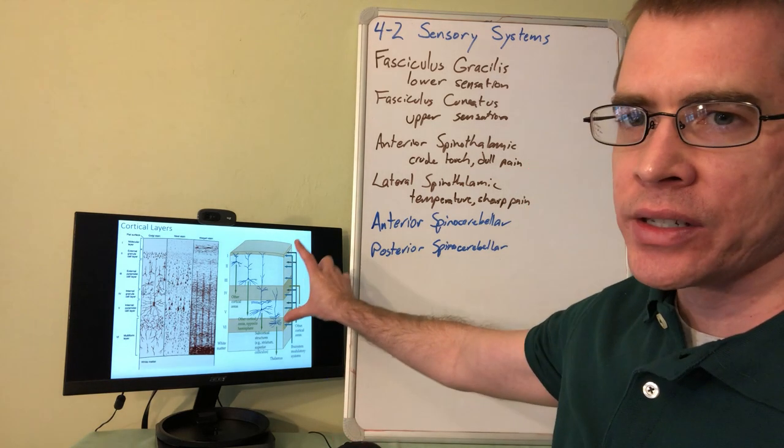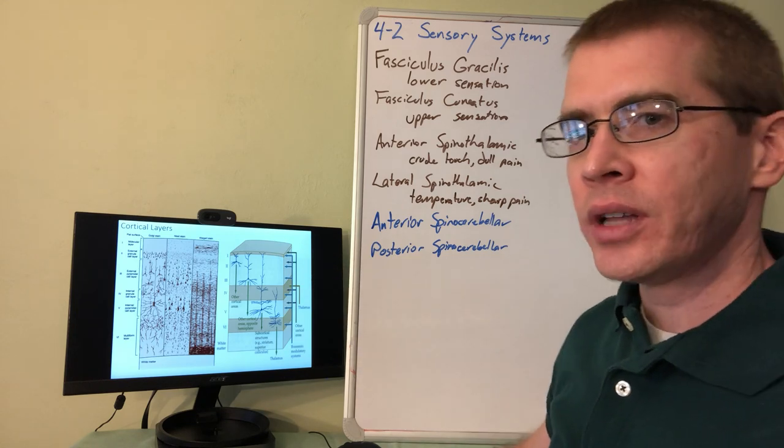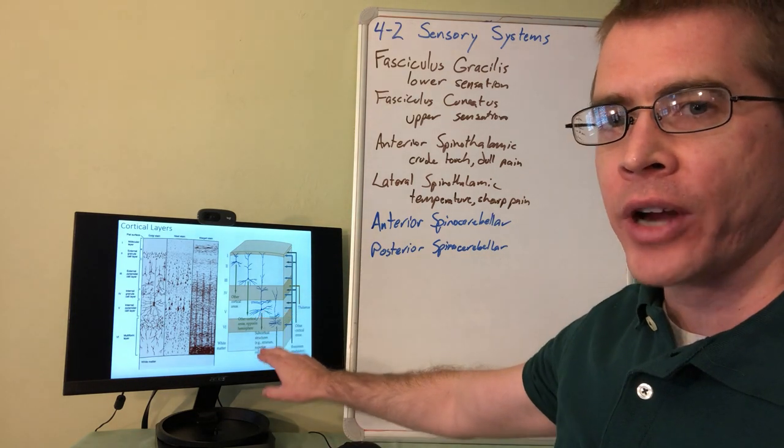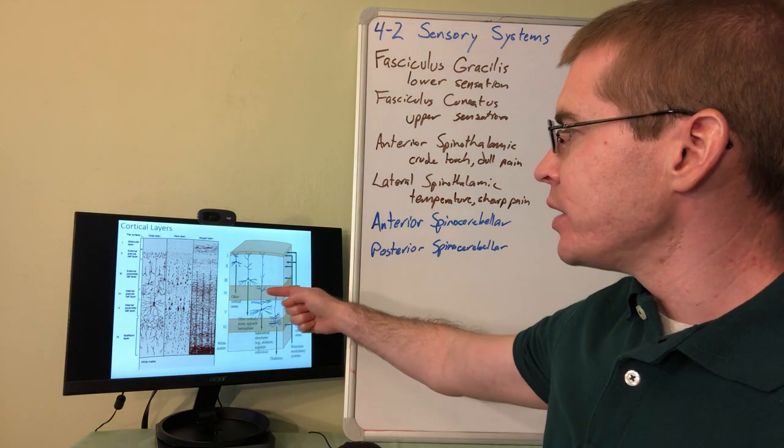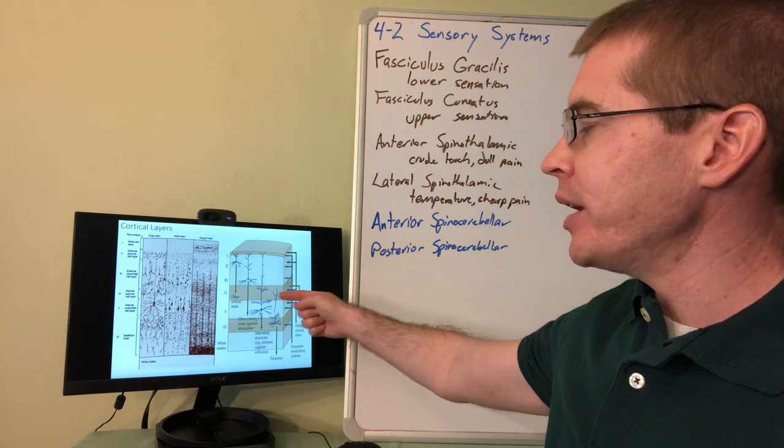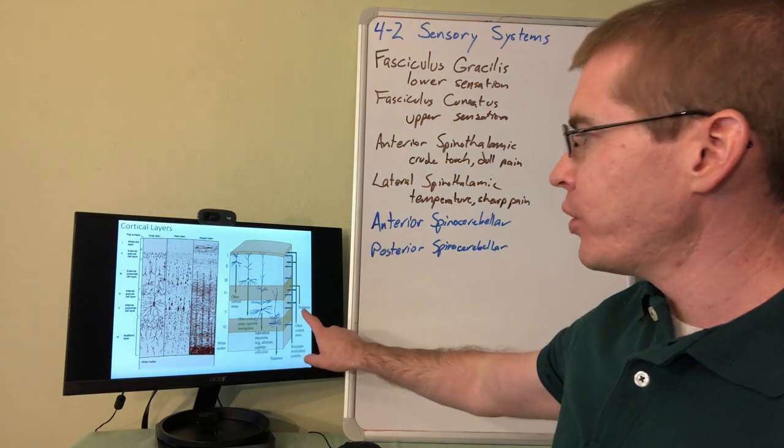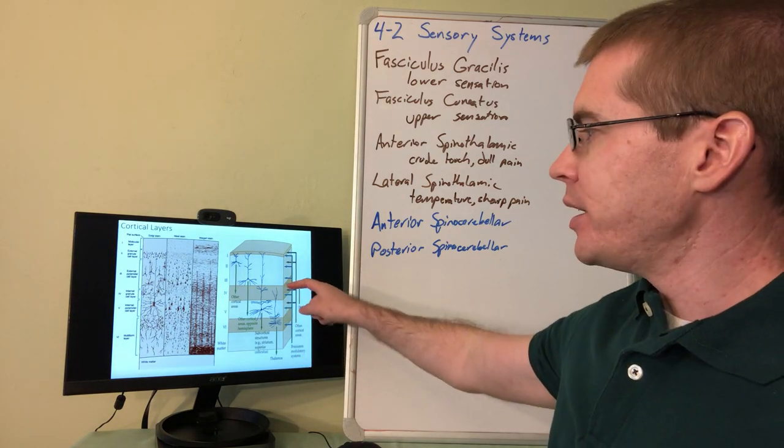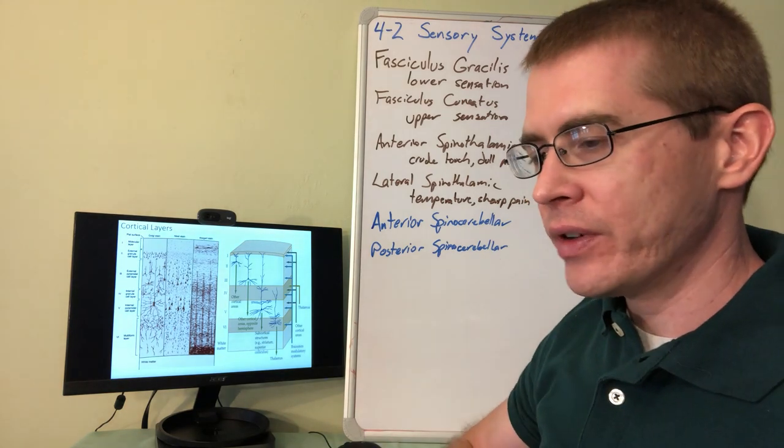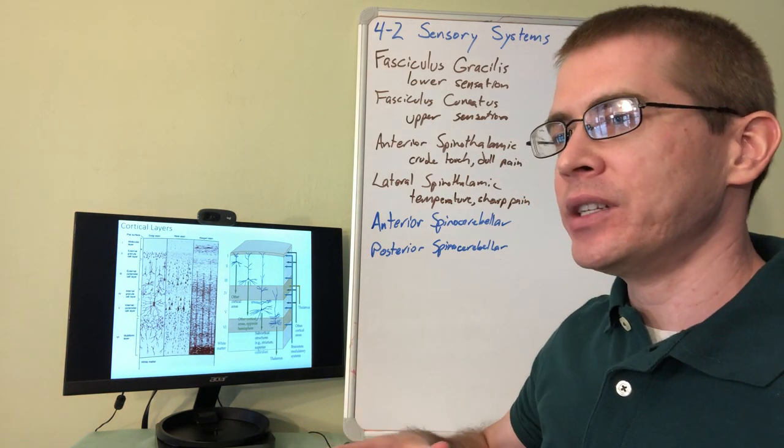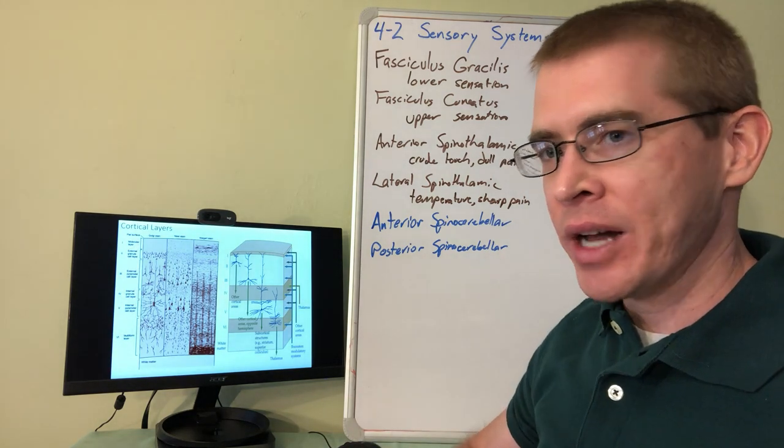So here again is this now familiar picture of the cortical layers or drawings of the cortical layers. We talked about how layer five neurons are the primary output for motor functions. Well layer four neurons are the primary input layer for sensory information. So thalamic nuclei enter and synapse on layer four to give us that conscious sensation. Anything that doesn't enter layer four sensation-wise is not consciously detected by our bodies.